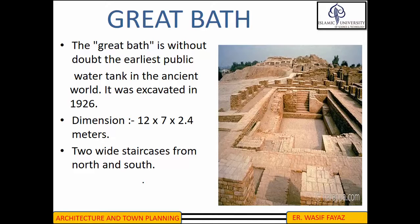A hole was found at one end of the bath which might have been used to drain the water. The floor of the tank was watertight due to finely fitted bricks and mud laid on the edge with gypsum plaster, and the side walls were constructed in a similar manner. To make the tank even more watertight, a thick layer of bitumen — a kind of waterproof tar — was laid along the sides of the pool and presumably also on the floor. A series of rooms were located along the eastern edge of the building, and in one room was a well that may have supplied water to fill the tank.